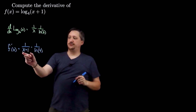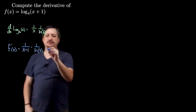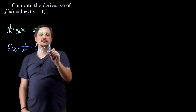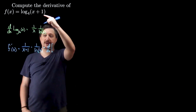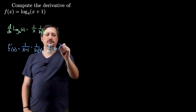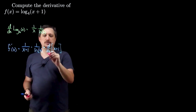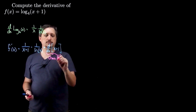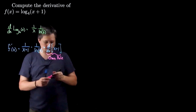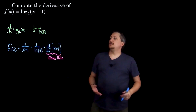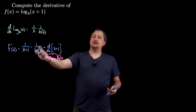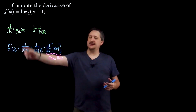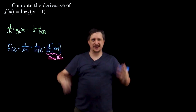But then, since this is not just x, I have to multiply by the derivative with respect to x of the actual inside, x plus 1. This part here is the chain rule. So 1 over natural log of 4 is a constant. By convention it's better to write it in front, but I like to think of it as coming after because that way that part always sticks in my head better.